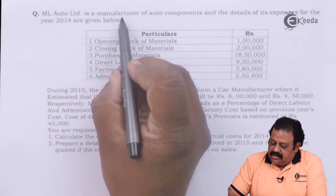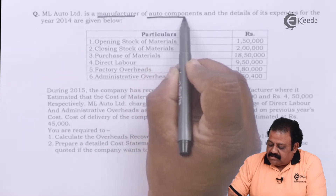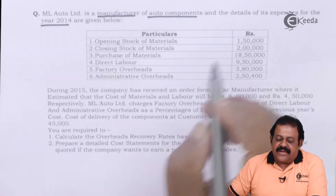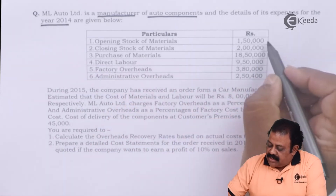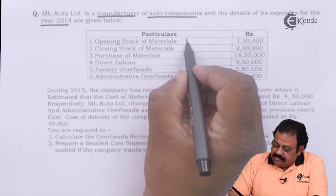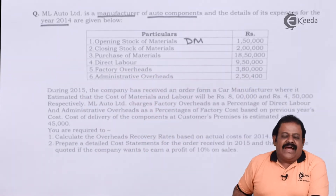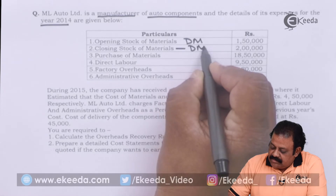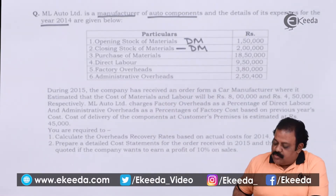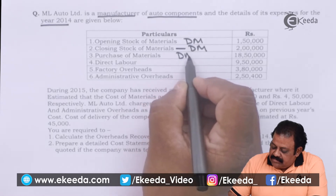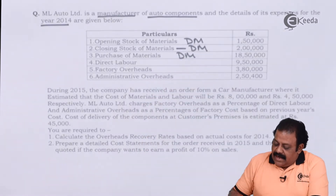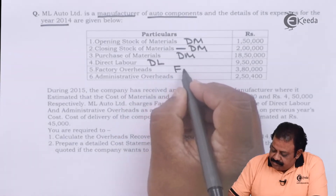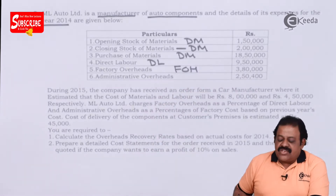ML Auto Limited is a manufacturer of auto parts and auto components. The details of its expenses for the year 2014 are given: opening stock of raw material 1,50,000, which will be added to direct material consumed. Closing stock of raw material 2 lakhs, which will be deducted from direct material consumed. Purchase of material will be part of direct material. Direct labor, that is direct wages, and factory overheads and administration overheads are also given.